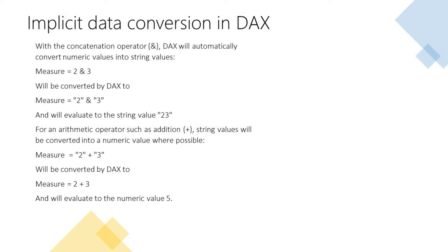However there is the potential for errors to occur when allowing for automatic conversions. For example, you can pass string values to an arithmetic operator that can't be converted into numbers, and your expression will then generate an error. So you need to ensure that you use the correct data types for columns where possible when they are going to be used with operators. Where there is a possibility of errors occurring you should use exception handling to deal with these potential errors.